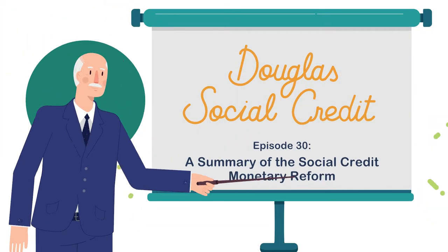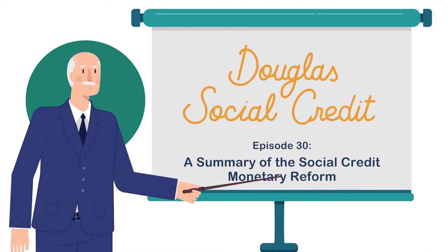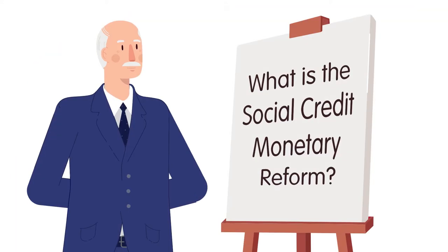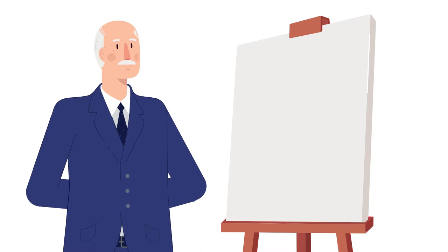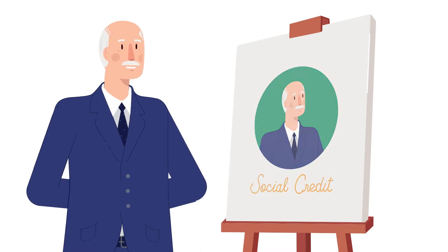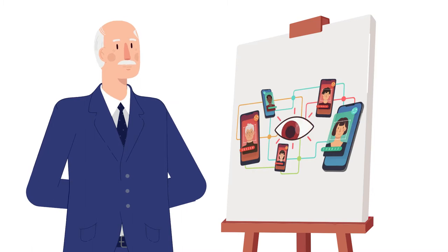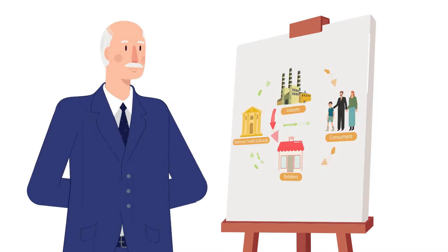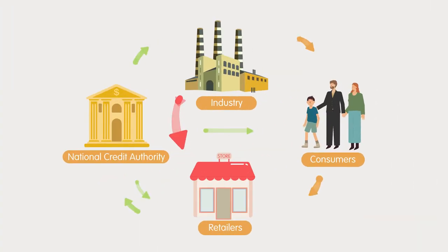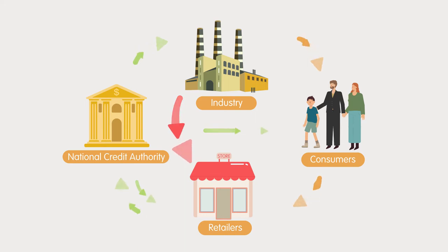Episode 30: a summary of the Social Credit Monetary Reform. So what is the Social Credit Monetary Reform all about? Douglas Social Credit — not to be confused with Chinese Social Credit — is a set of proposals to alter the financial infrastructure upon which our economy is built. The purpose of these modifications is to re-engineer the financial system so that it can finally benefit everyone in an effective, efficient and fair manner.